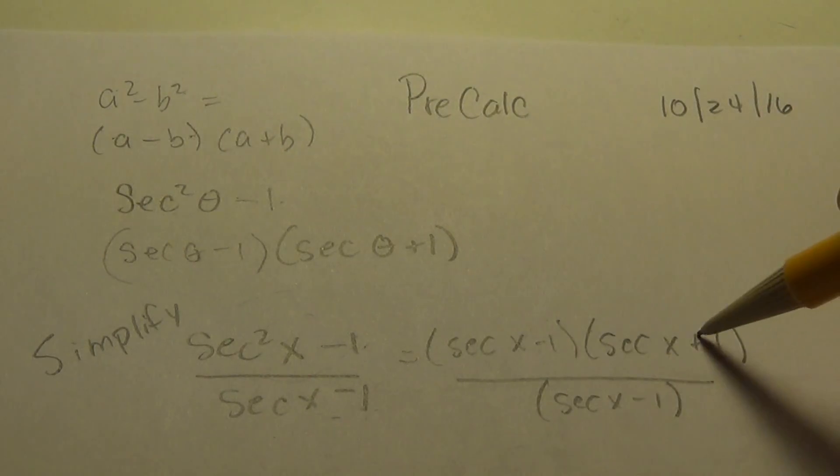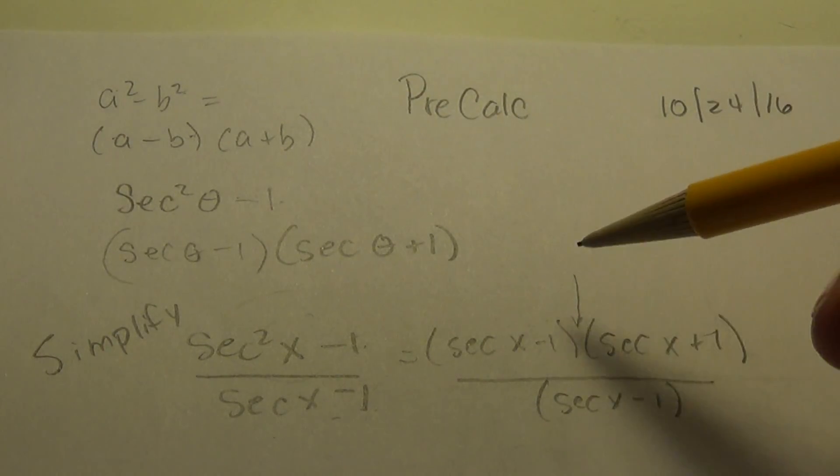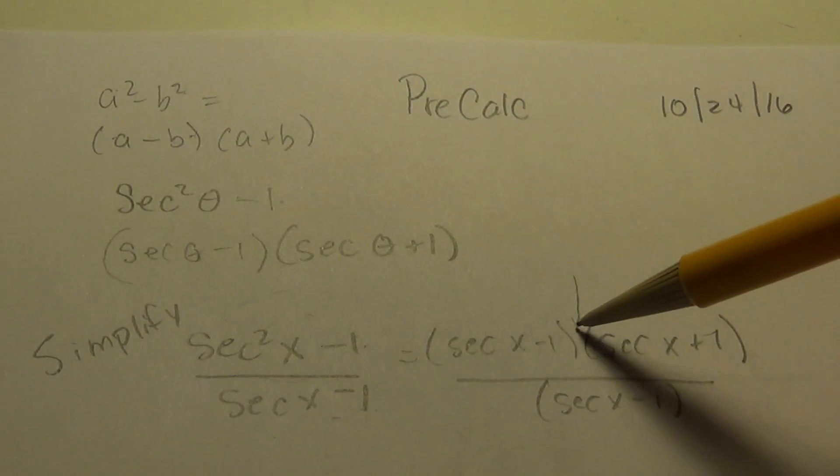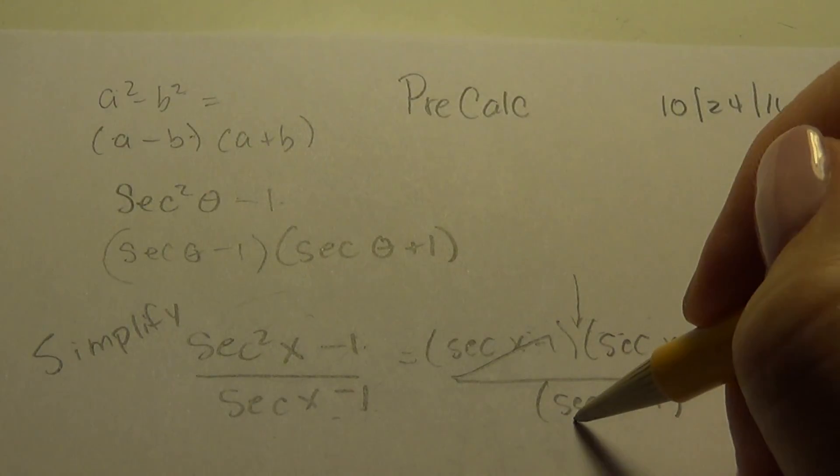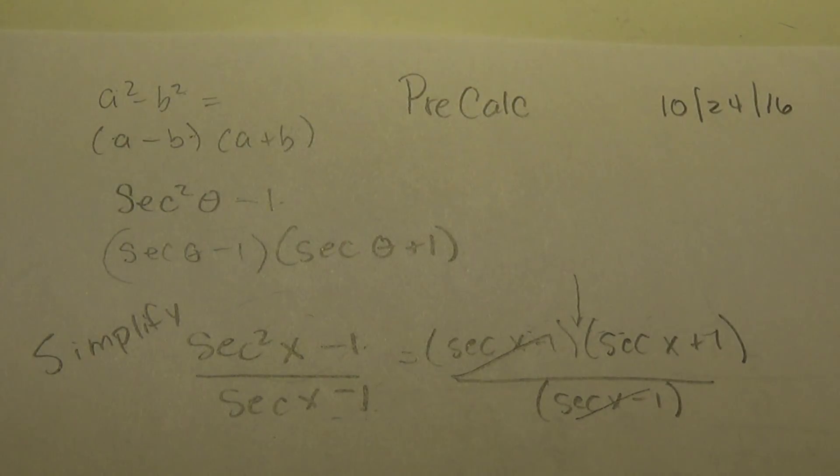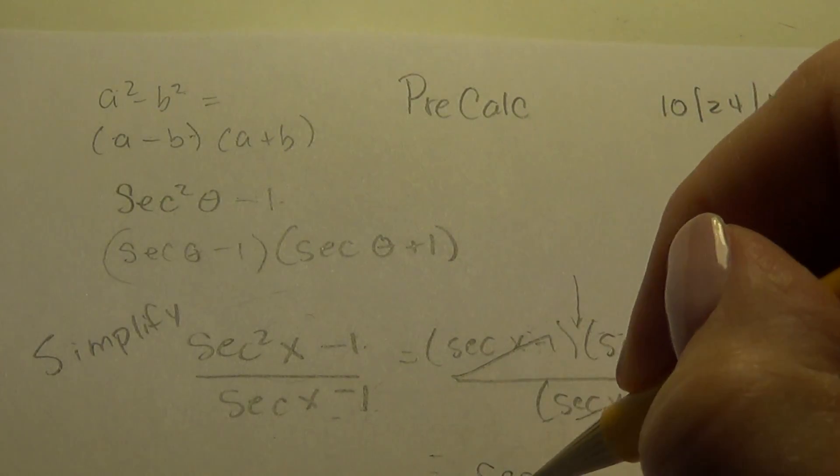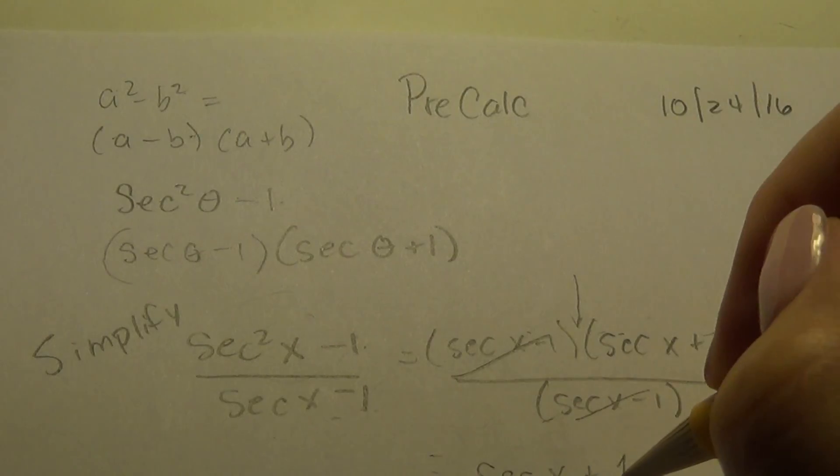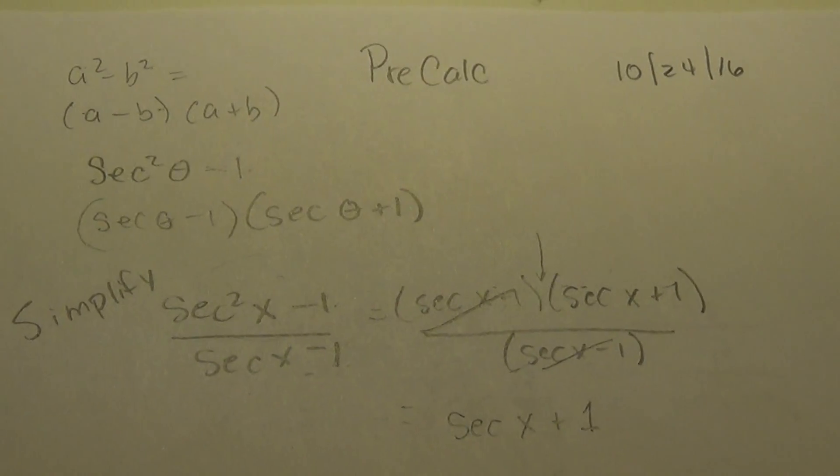Now that this is held to this by multiplication, the operator between these two is multiplication. Now I can cancel this whole term with this whole term. Or this whole factor by this whole factor. And the answer is secant x plus one. So that's as simplified as I can go.